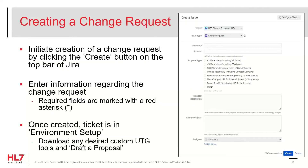To initiate the creation of a change proposal, navigate to the UP project in HL7 JIRA and click the blue Create button on the top of the page. This initiates a pop-up window with required and optional fields to be entered for the proposal. Ensure that the project is UTG Change Proposals in the project field. If you are submitting a change proposal, select Change Request from the Issue Type drop-down.